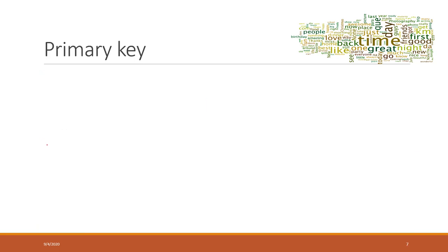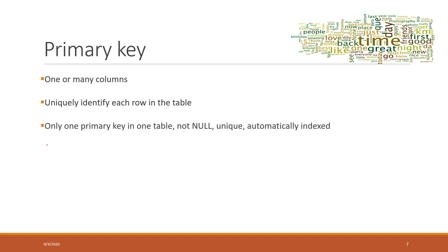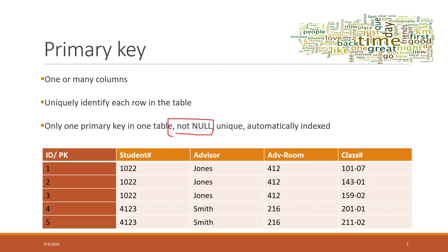Let's review what a primary key is. A primary key can be one column or a combination of multiple columns. It must be unique, and it will normally be automatically indexed. For primary keys, you cannot have null values. We can always add a separate column that serves as the primary key — just add IDs as unique numbers for that table.